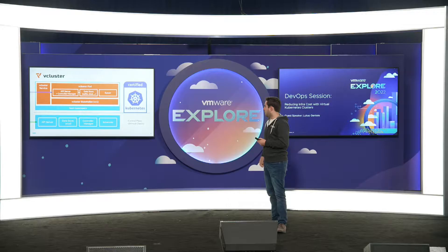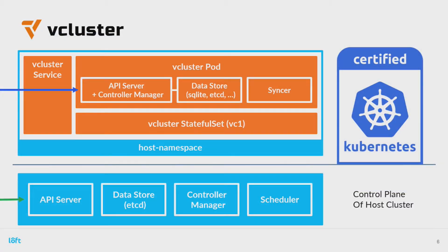Let's see how this works with an example. One important thing: the cluster is a certified Kubernetes distro, meaning it behaves 100% like any other Kubernetes distribution — whether GKE, EKS, or vCluster, they're all behaving the same. A user won't be able to tell the difference. They've all fulfilled certain standards that the CNCF sets out for API servers, controller managers, etc. vCluster fulfills all these compliance criteria.